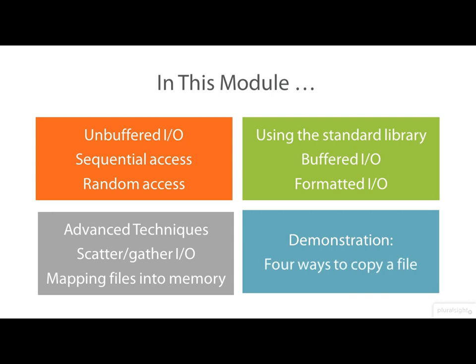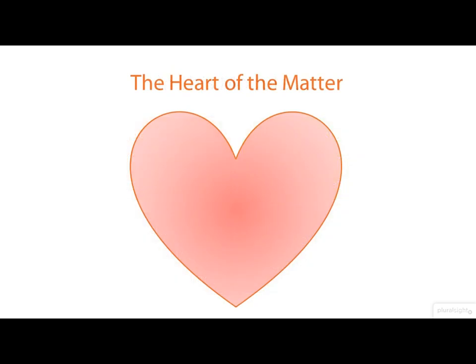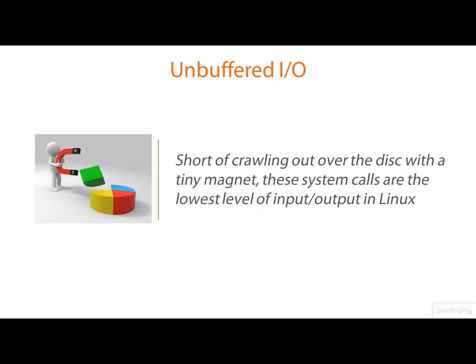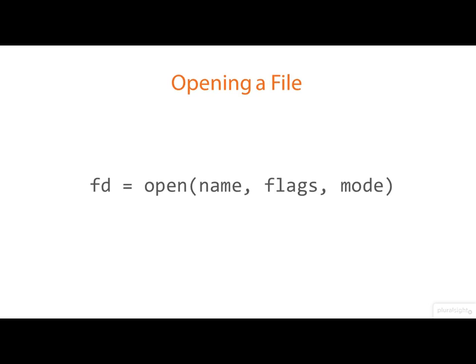Our demos will include no less than four ways of copying a file. The first four system calls we're going to meet — open, close, read, and write — really do form the heart of file IO in Linux. They are at a very low level, and short of crawling over the disk with some sort of tiny magnet, these system calls are really the lowest level of doing file IO in Linux.